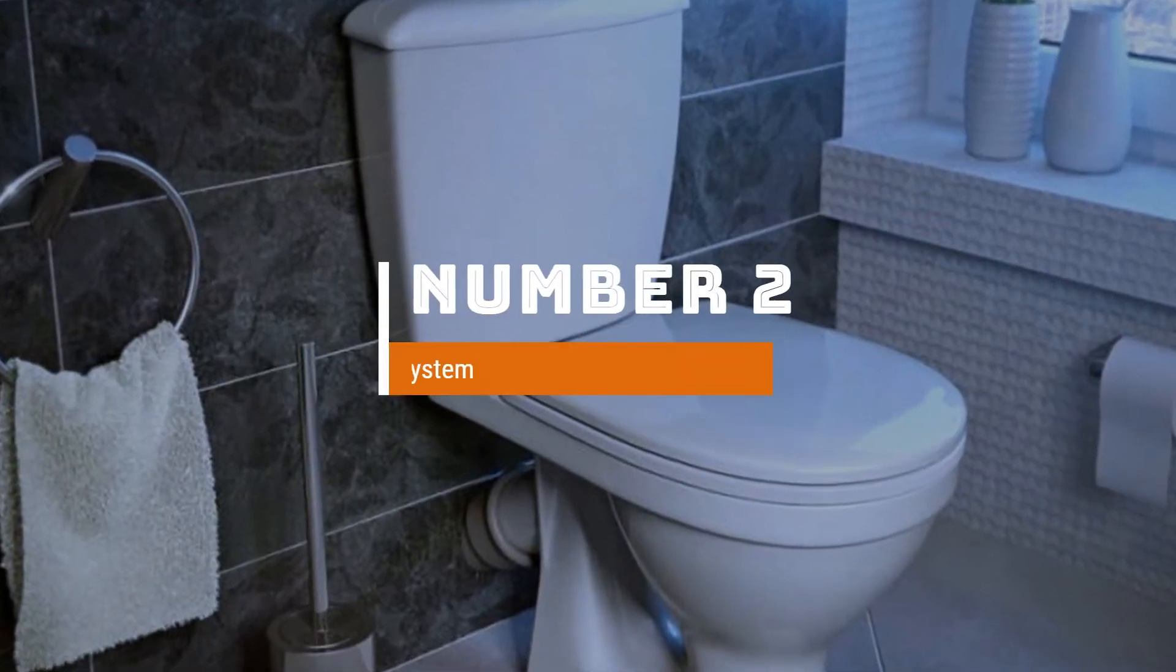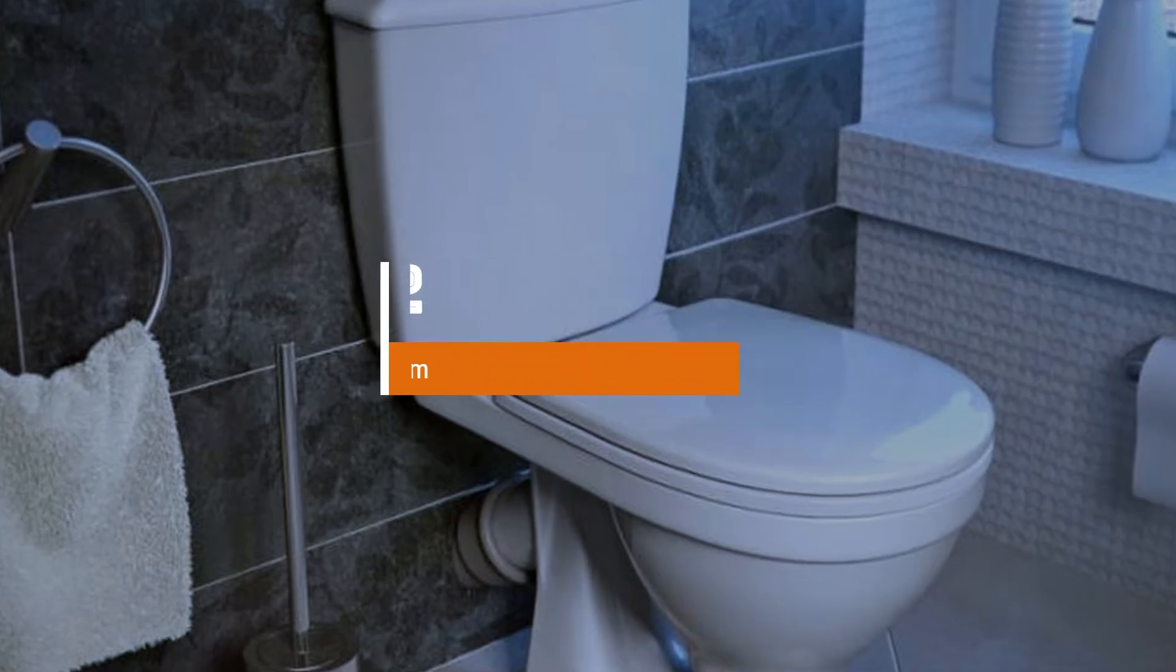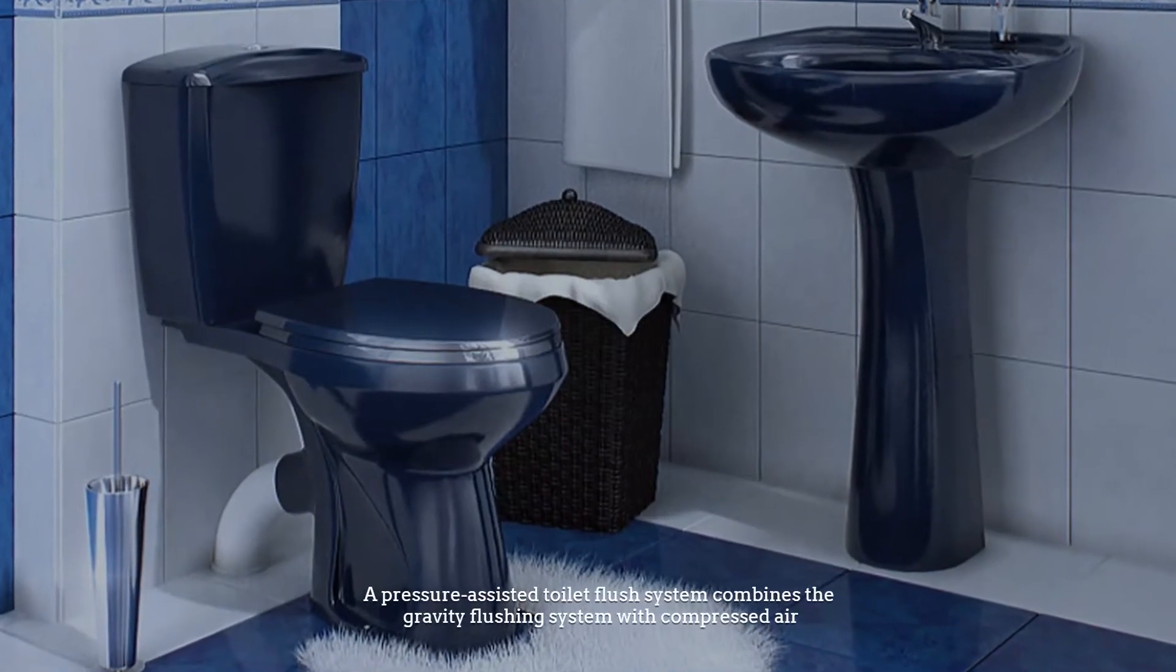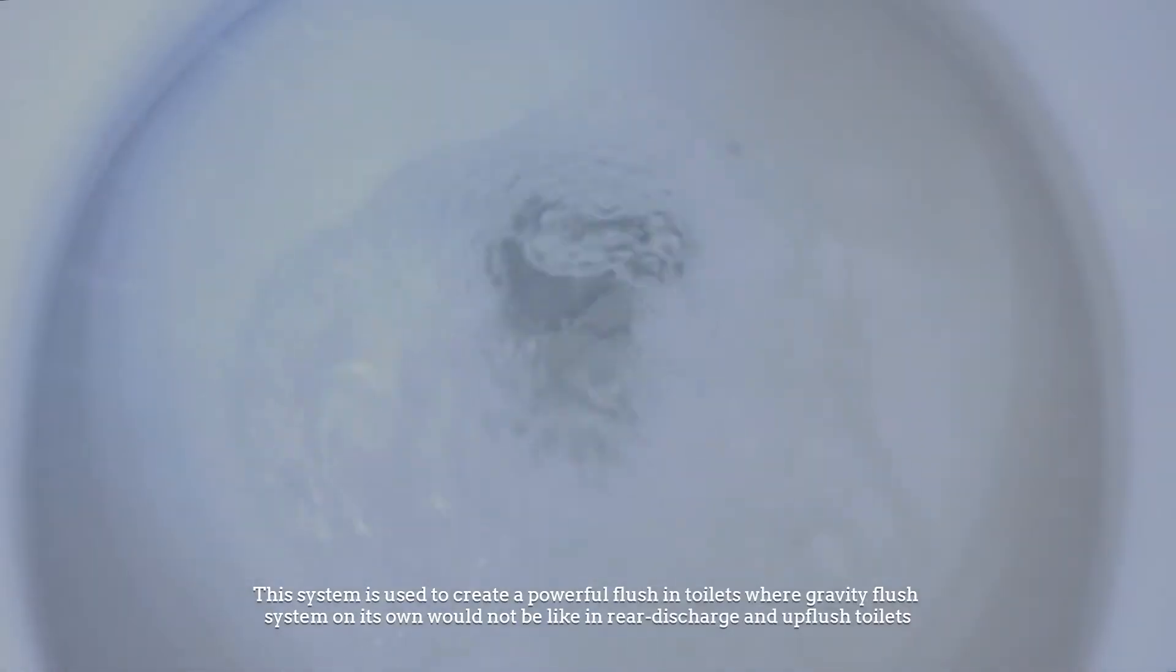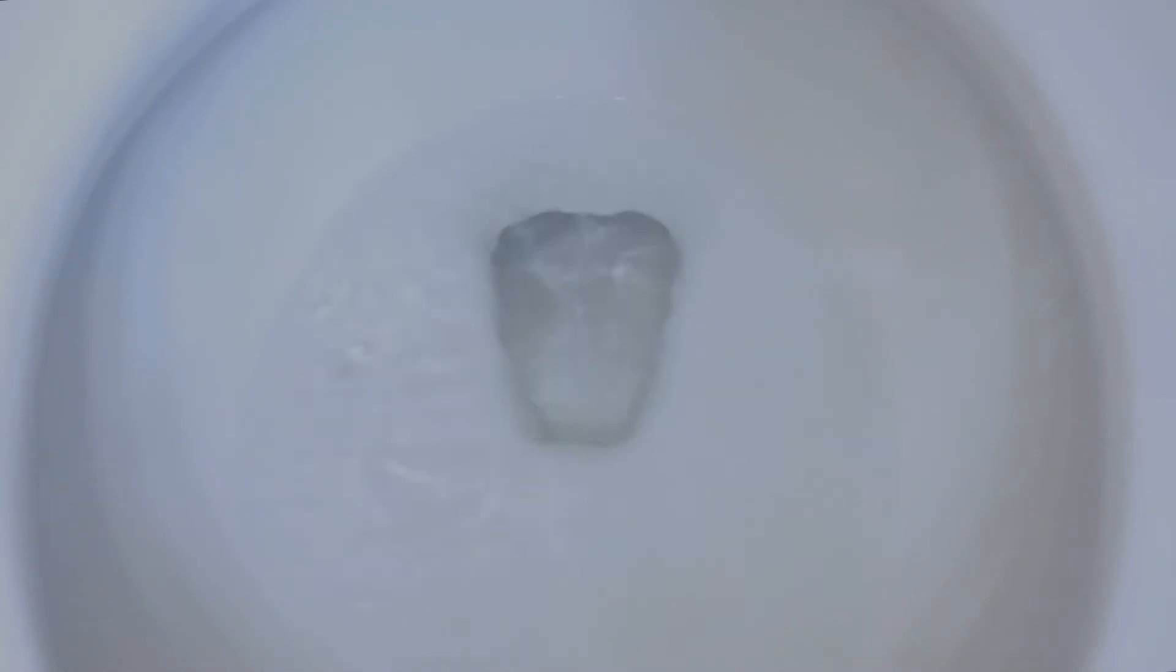Number 2: Pressure Assisted Flushing System. A pressure assisted toilet flush system combines the gravity flushing system with compressed air. This system is used to create a powerful flush in toilets where a gravity flush system on its own would not be sufficient, like in rear discharge and up flush toilets.